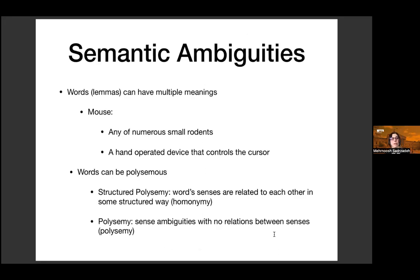This is what we started working on with Daphne: can we say something about semantic ambiguities using quantum contextuality? Words — or more formally, lemmas — can have multiple meanings. 'Mouse' can be a small rodent or a computer input device. Words are polysemous, and there are two kinds of polysemy: structured polysemy, where word senses are related to each other, and unstructured polysemy — also known as homonymy — where meanings have no relation between them.